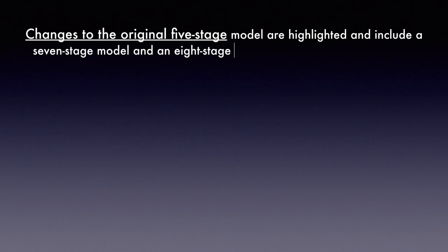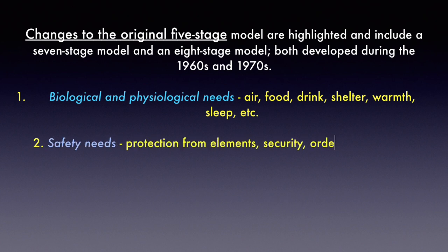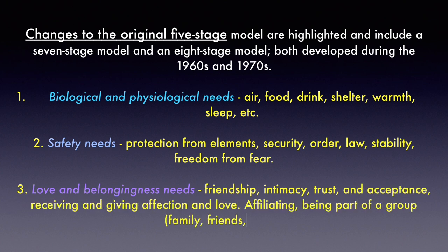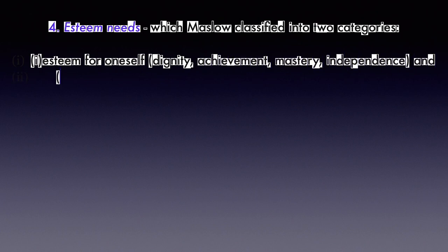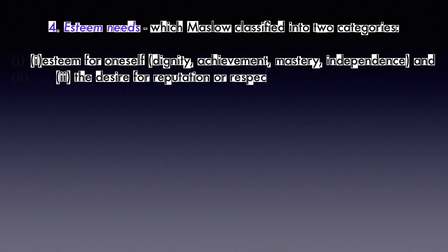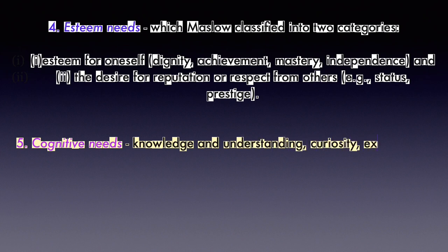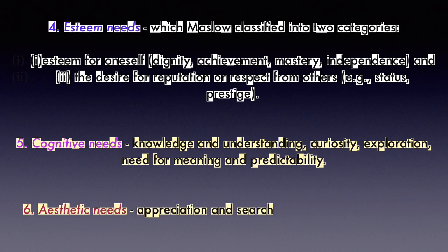In the 1960s and 70s, further research led to expanded seven-stage and eight-stage models of Maslow's hierarchy. The original five stages remain, with additions: number five is cognitive needs — knowledge, understanding, curiosity, exploration, need for meaning and predictability; number six is aesthetic needs — appreciation and search for beauty, balance, and form; number seven is self-actualization — the same as before, realizing personal potential, self-fulfillment, seeking personal growth and peak experiences.